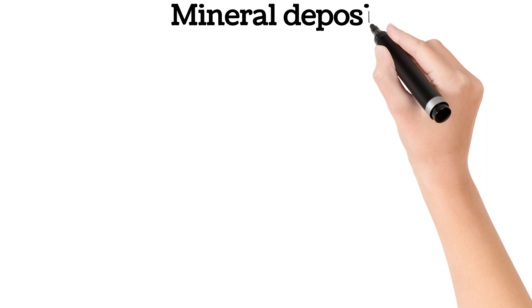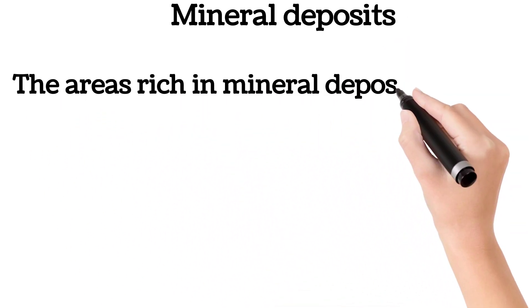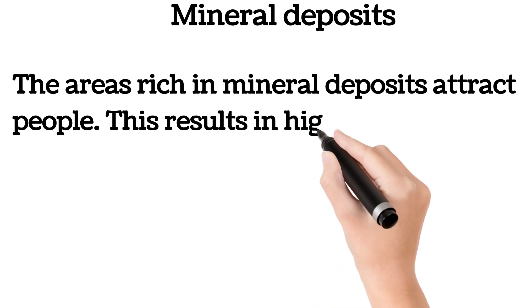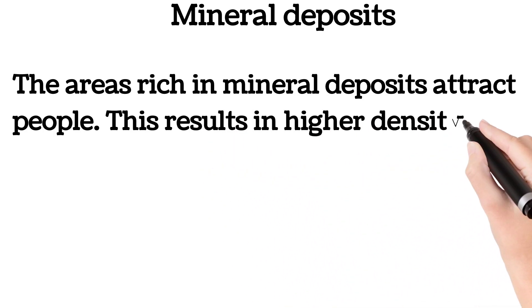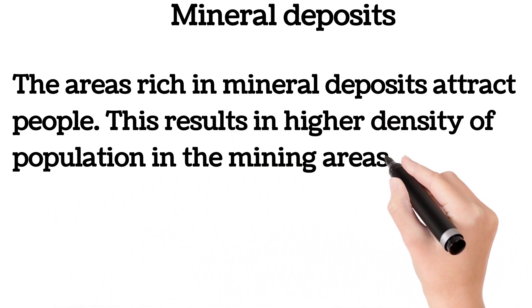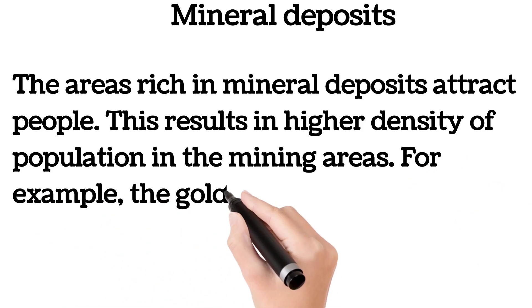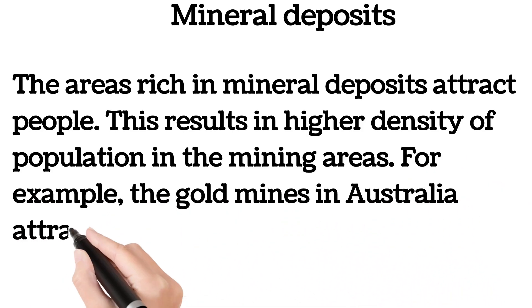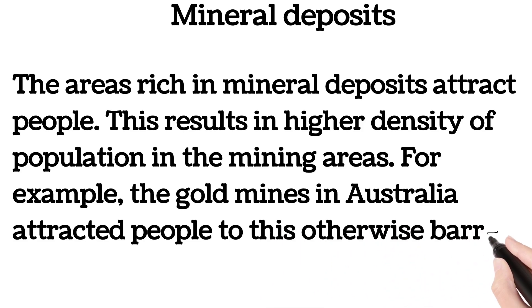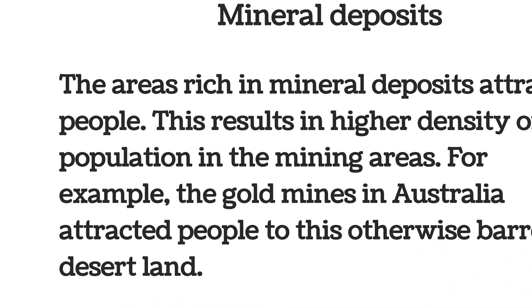Mineral deposits: areas rich in mineral deposits attract people, resulting in higher density of population in mining areas. For example, the gold mines in Australia attracted people to an otherwise barren desert land.